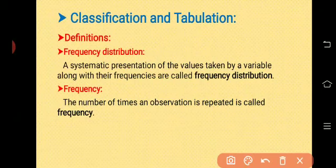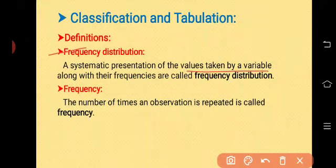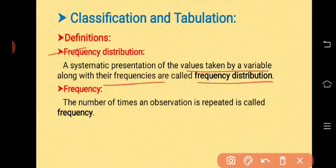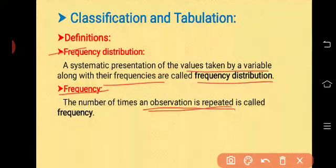Today's first definition is frequency distribution. A systematic presentation of the values taken by a variable along with their frequencies is called frequency distribution. Now, what is meant by frequency? The number of times an observation is repeated is called frequency. For example, if the value 5 is repeated 10 times in the data, then 10 is the frequency of 5.